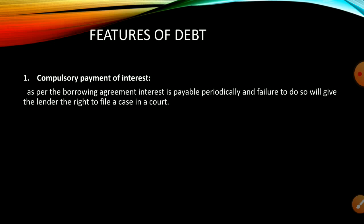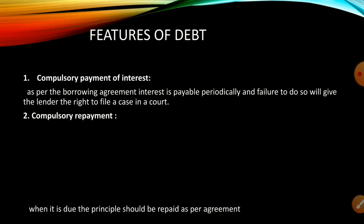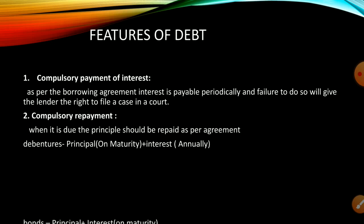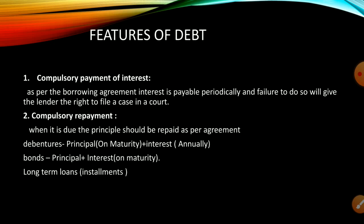The second feature is compulsory repayment. When debt becomes due, the principal should be repaid as per the agreement. In case of debentures, principal is payable on maturity while interest is payable annually. In case of bonds, both principal and interest are paid at maturity. In case of long-term loans, principal plus interest are paid in installments. Failure to repay debt when secured by company assets will lead to the lender taking over those assets.